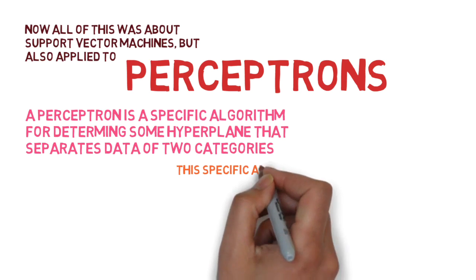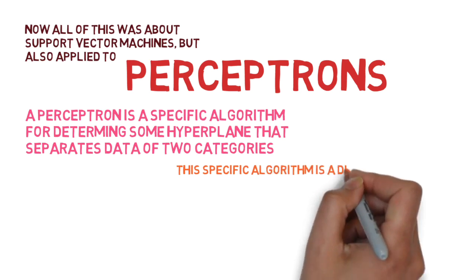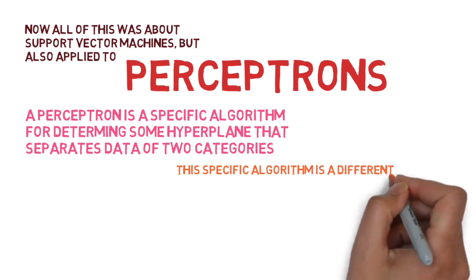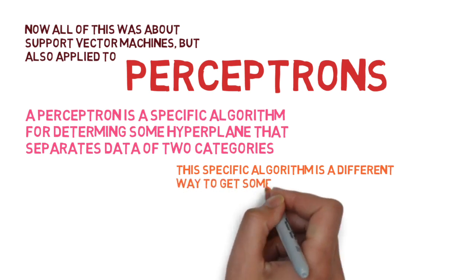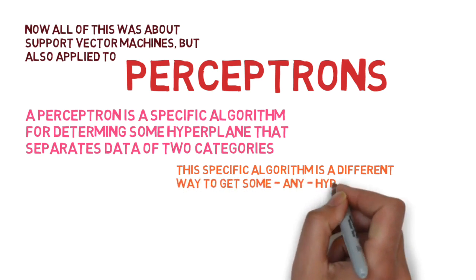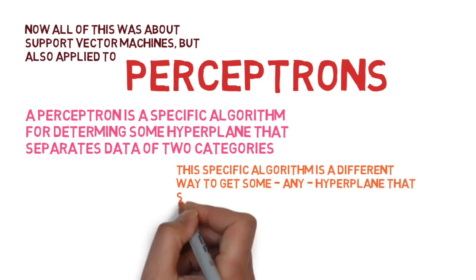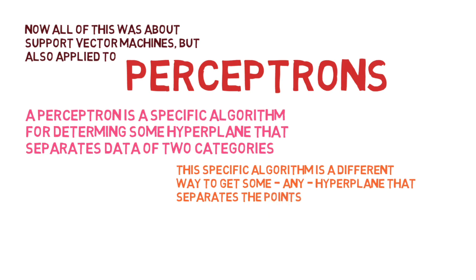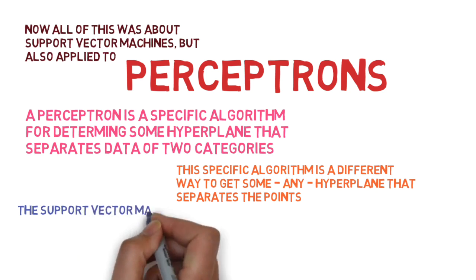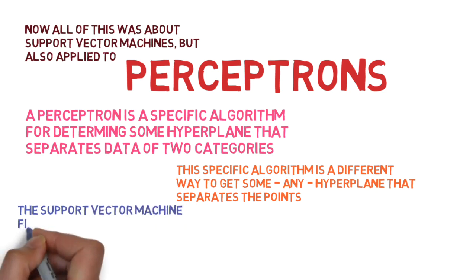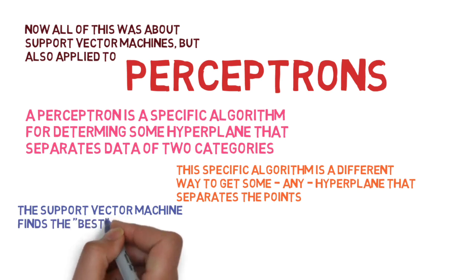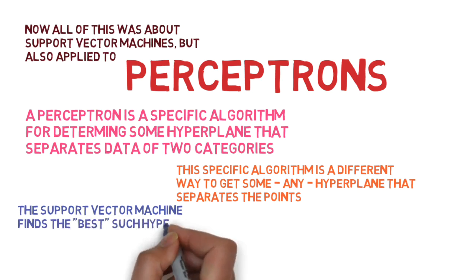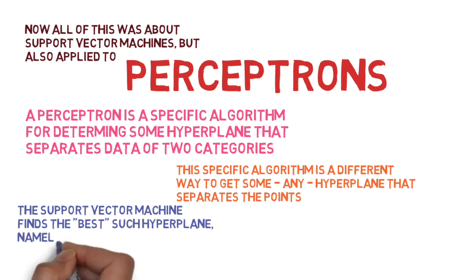Just like support vector machines, the specific algorithm looks for a way to separate the two clusters of points. But it doesn't really care which hyperplane it uses to separate these points. It just wants any hyperplane which could potentially separate the points. On the other hand, the support vector machine, as we discussed, finds the best such hyperplane, which is the maximum margin hyperplane.